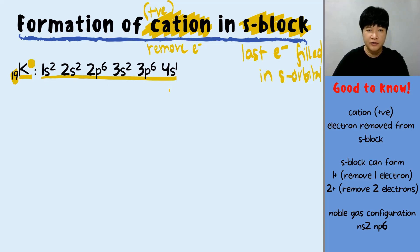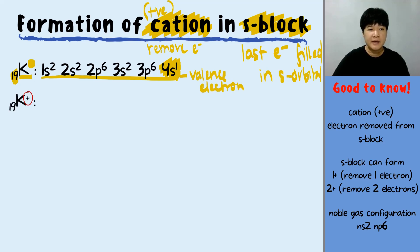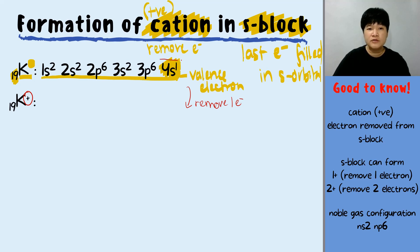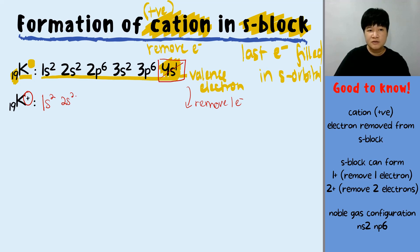The cation that potassium forms is K+, which means we need to remove one electron — the valence electron. To form K+, we remove the 4s1 electron. Therefore, the electronic configuration of K+ will be 1s2, 2s2, 2p6, 3s2, 3p6, because the 4s1 electron has been removed to form the positive charge.